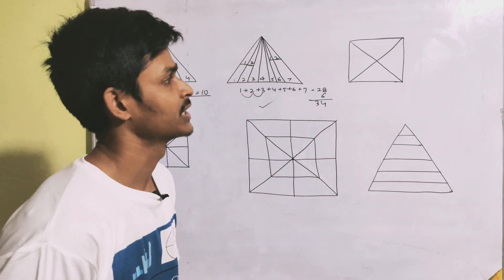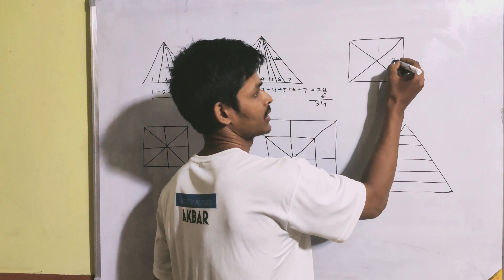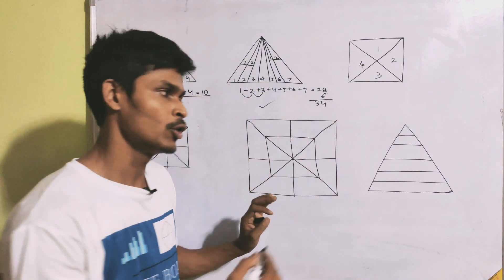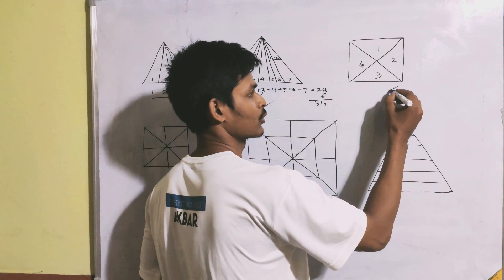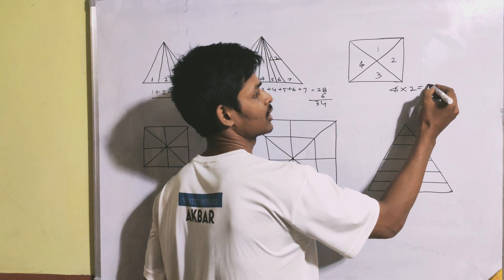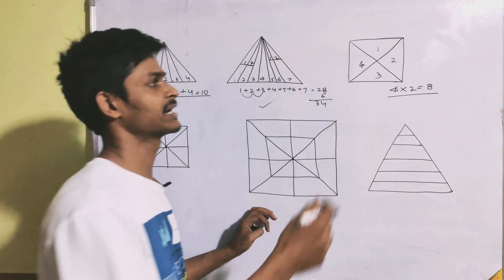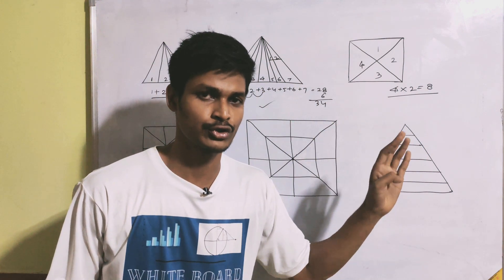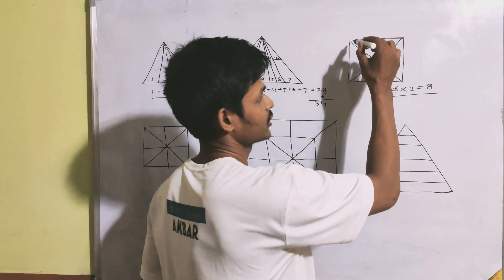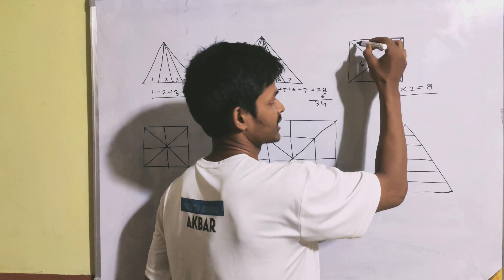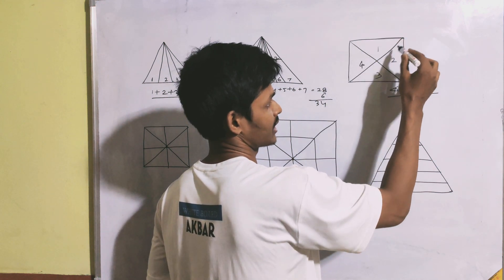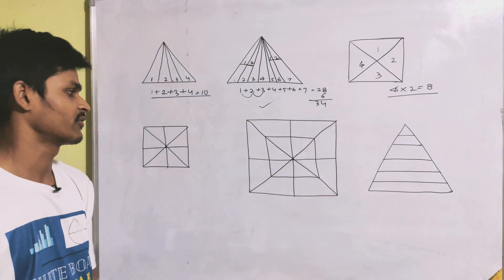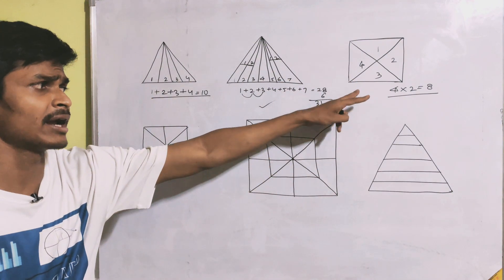Next, count the triangles: 1, 2, 3, 4. Number 4 double is 8. This diagram is 8. So you can see the option — count the triangle. Next diagram.